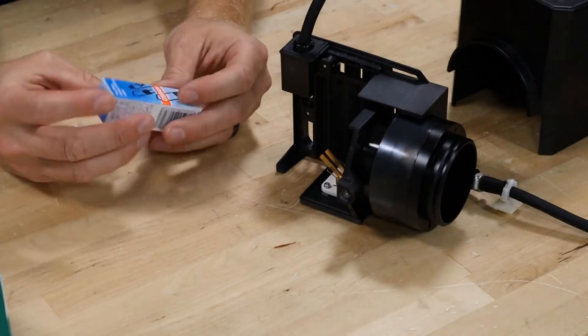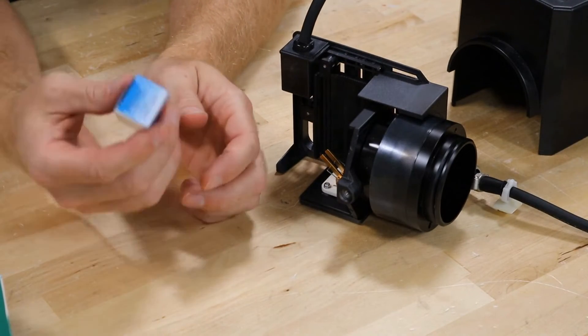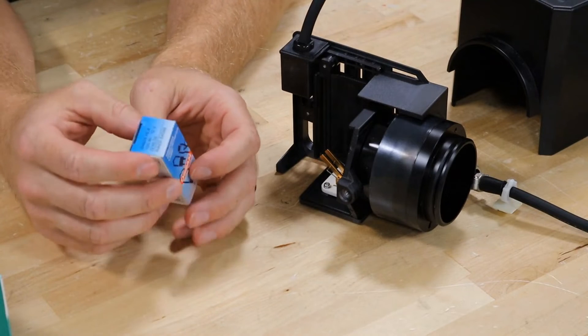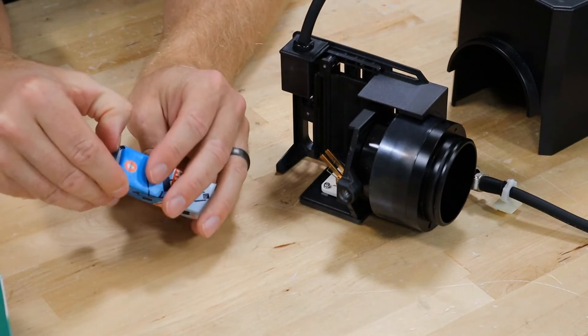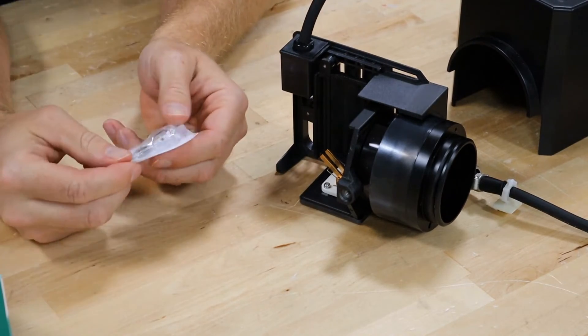Now that we have the old bulb removed, Chad is going to show you the new bulb we're going to be using, which is an Osram 12 volt 100 watt bulb. Here he's going to demonstrate how to take it out of the packaging without letting your fingers touch the glass, because you don't want the oil from your fingers on the glass as it can cause the bulb to fail early.